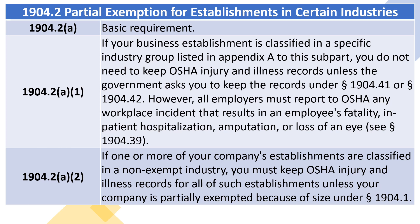1904.2(a)(1): If your business establishment is classified in a specific industry group listed in Appendix A to this subpart, you do not need to keep OSHA injury and illness records unless the government asks you to keep the records under Section 1904.41 or Section 1904.42.